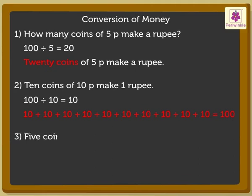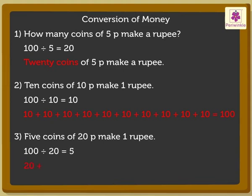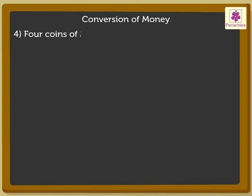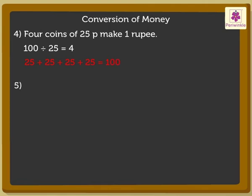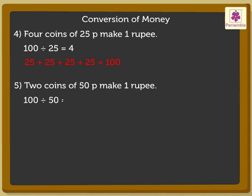3. Five coins of 20 paise make 1 rupee. Here, 100 divided by 20 is equal to 5, so five 20-paise coins add up to 100. 4. Four coins of 25 paise make 1 rupee. And 2 coins of 50 paise make 1 rupee, since 100 divided by 50 is equal to 2, and 50 plus 50 is equal to 100.